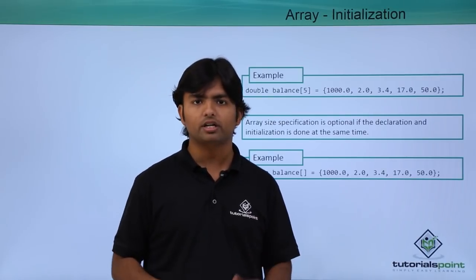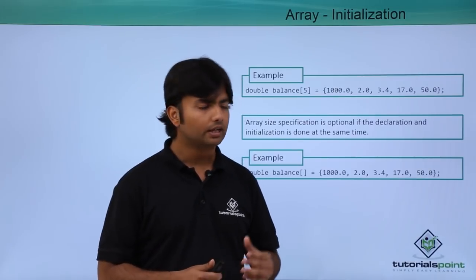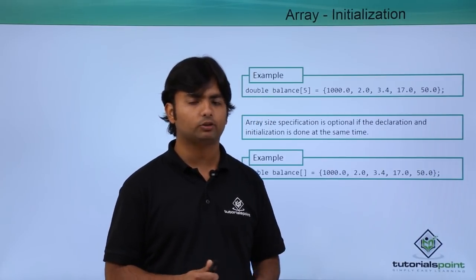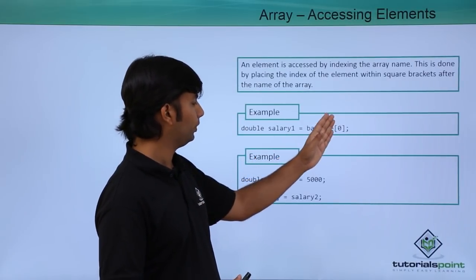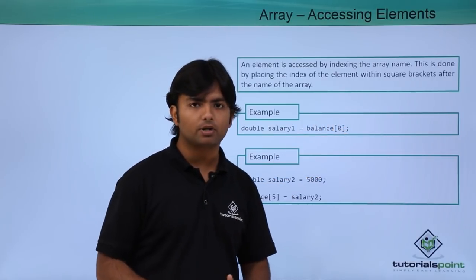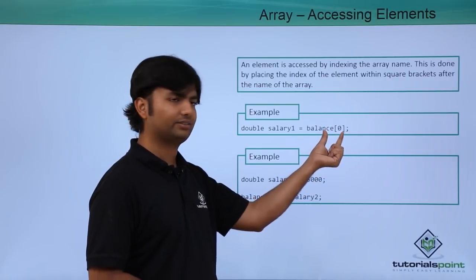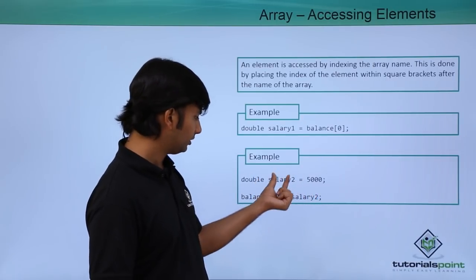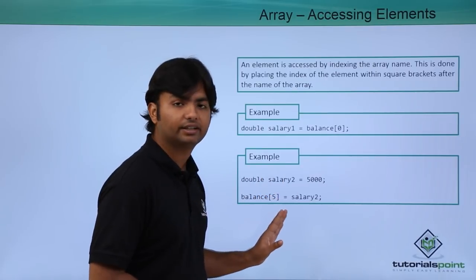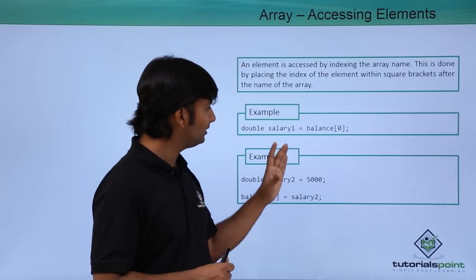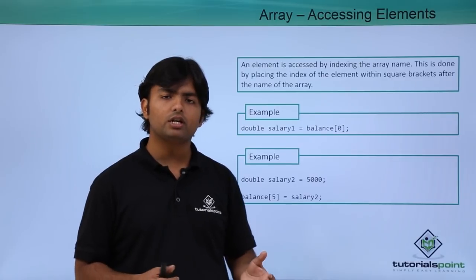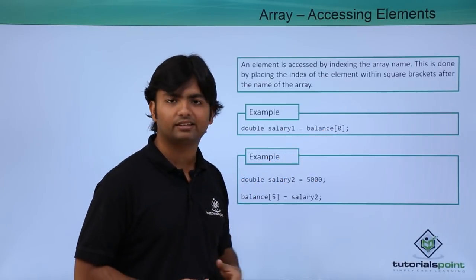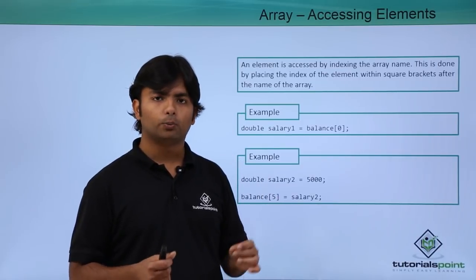To access a specific element for reading or writing, use the array name with the index in square brackets. For example, to read the first element of array 'balance', pass index 0. To write, assign a value at a particular index — for instance, assign to index 4. If you want to read or write all elements, you can write a loop rather than hard-coding each index.